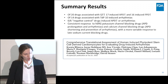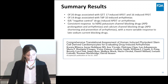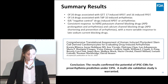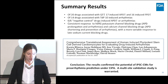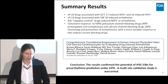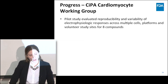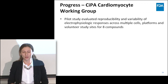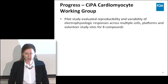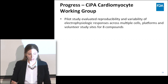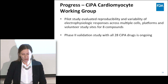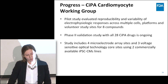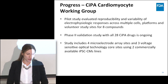The results of this collaborative study were summarized in a paper just accepted for publication in Toxicological Sciences. The conclusion was that results confirmed the potential of iPSC cardiomyocytes for proarrhythmia prediction under CiPA, and a multi-site validation study was warranted. The CiPA cardiomyocyte group completed a pilot study evaluating reproducibility and variability of electrophysiological responses across multiple cells, platforms, and volunteer sites for eight compounds. A phase two validation study with all 28 CiPA drugs is in progress, including four MEA sites and three voltage-sensitive optical technology core sites using two commercially available iPSC cardiomyocyte lines.